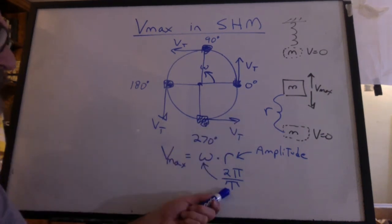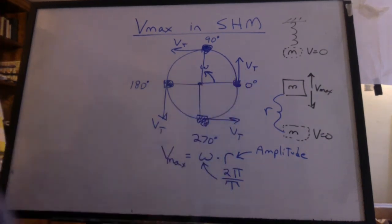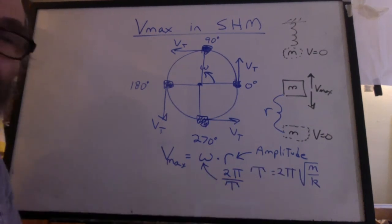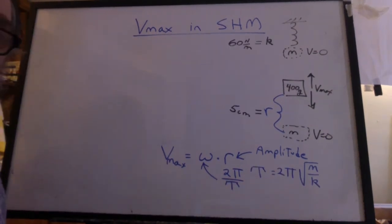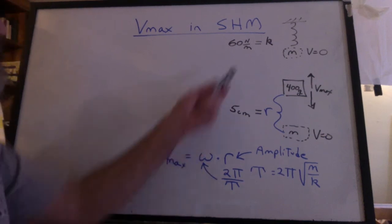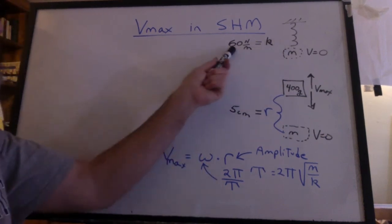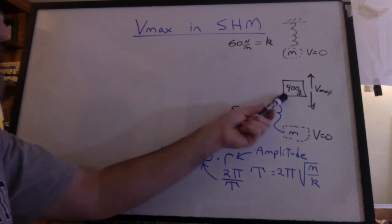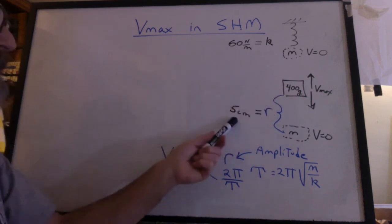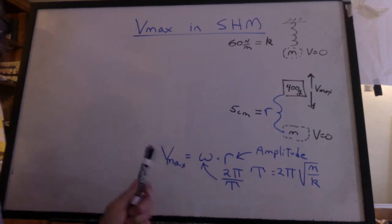So what's the period? Well, for a spring oscillator, it's two pi square root of m over k. Let's do a little practice. Let's say k, the stiffness of the spring, was 60 newtons per meter. The mass was 400 grams, and the amplitude is 5 centimeters. Why don't you go figure out what the Vmax is? Pause the video. Try it out before I do it.